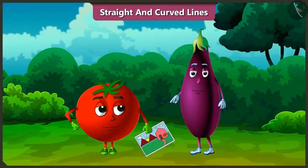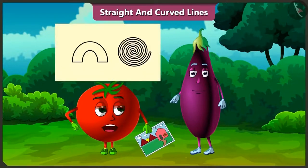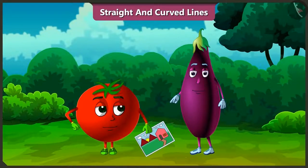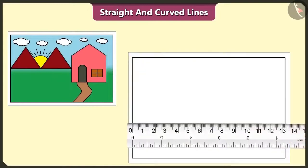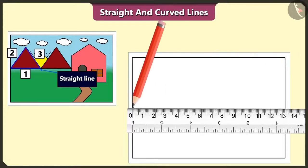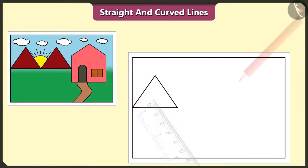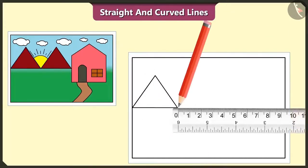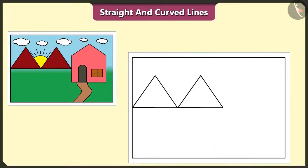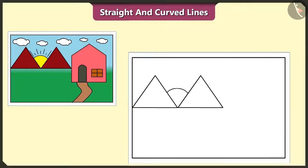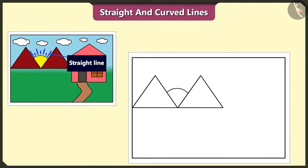Okay, so we have to draw this picture using straight and curved lines. Yes, so let's draw. First of all, let's draw a hill with the help of a scale on paper. This hill is made of three straight lines. And I made a similar hill beside it like this. Let's draw one sun with the curved lines between these two hills made up of straight lines, and draw sun rays using straight lines like this.